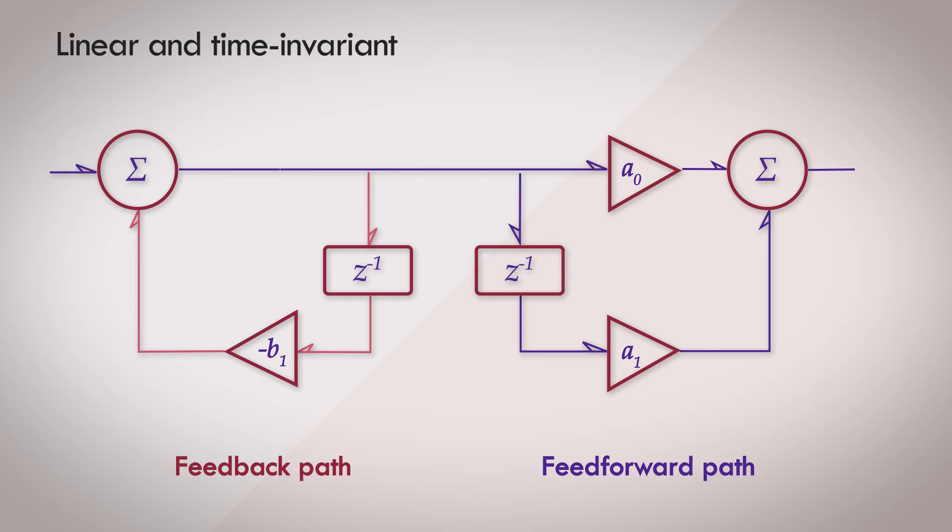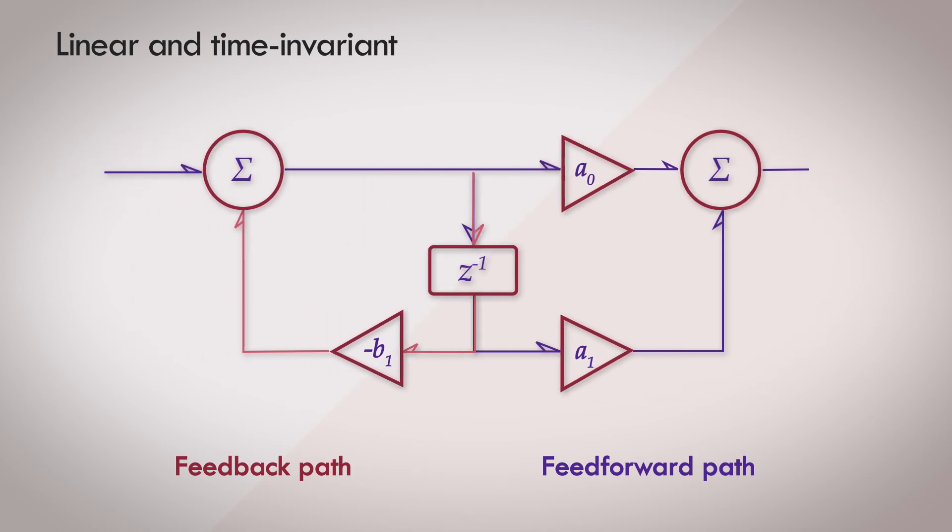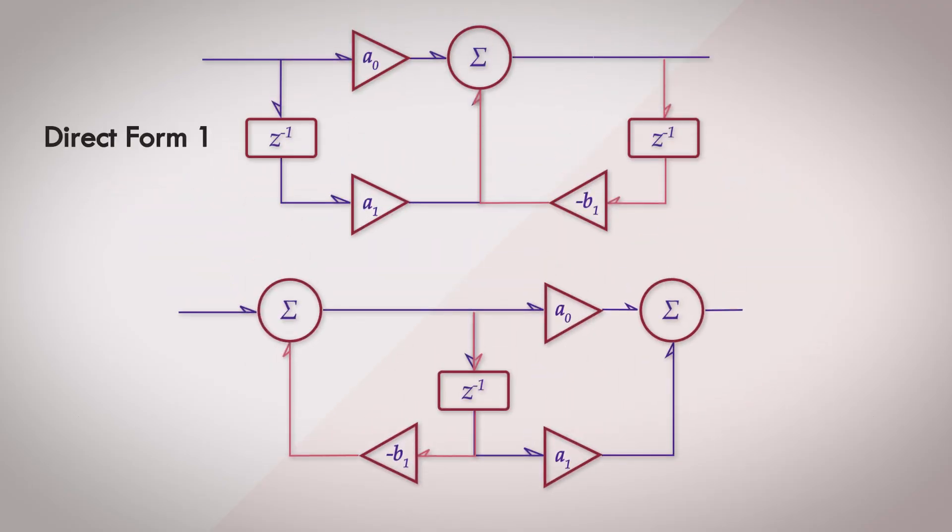If you solve for the difference equation, both forms result in the same difference equation, and they'll have the same frequency response. But why did I just do this? Well, you can simplify this further and make both paths share a single delay register. So we went from this, which is commonly called the direct form 1, to this, which is called the direct form 2, and we simplified the design and removed the need for multiple delay registers by just sharing a single one between the two paths. Clever, isn't it?